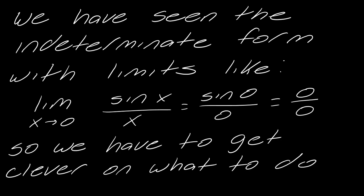When you get this 0 over 0, we have to get clever on what to do. This particular limit is kind of a crazy one because it's a lot of work to figure out what this equals. This does equal 1, but it's a lot of work to get there. And it doesn't equal 1 because 0/0 does not equal 1. It equals 1 for a long list of reasoning.